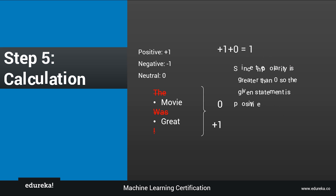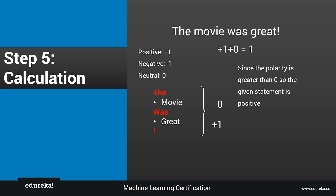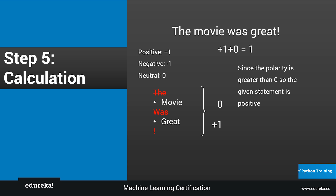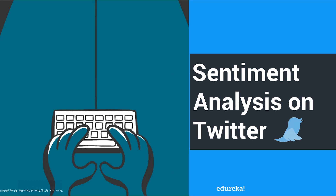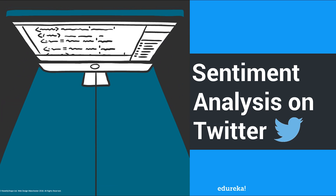Let's calculate the final sentiment score of the sentence. Since we have just two words that add value to the analytics, combining the scores gives us one plus zero, which equals one. Since the polarity is greater than zero, the statement is positive. For a beginner level, this was a step-by-step calculation for sentiment analysis. When you use Python, it's simpler than you might think — let me show you.